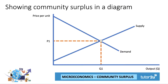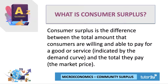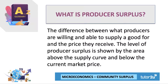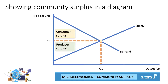So how do we show community surplus in a diagram? Let's take a demand and supply curve that both cut the Y axis. The equilibrium price is P1 and Q1. A quick reminder of two key concepts. First, consumer surplus — that's the difference between the total amount that consumers are willing and able to pay, indicated by the demand curve, and the total amount we actually have to pay at the market price. Producer surplus is the difference between what producers are willing and able to sell a good for and the price they actually receive. Producer surplus is shown by the area above the supply curve and below the price; consumer surplus is shown by the area underneath the demand curve and above the price.